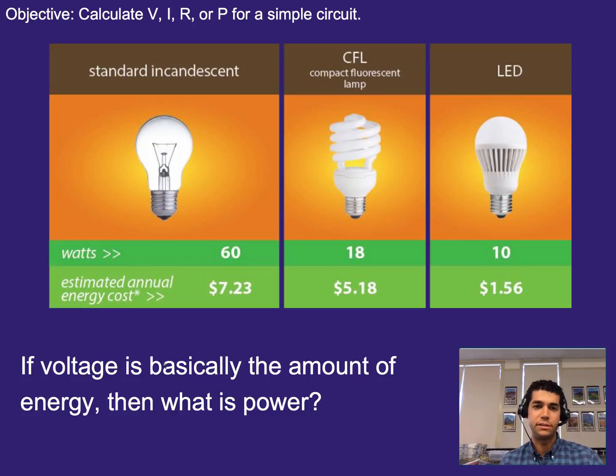So if voltage is basically the amount of energy per each charge, then what is power? Because they are separate things. Here we have an example of the power of each of these bulbs being 60, 18, and 10.